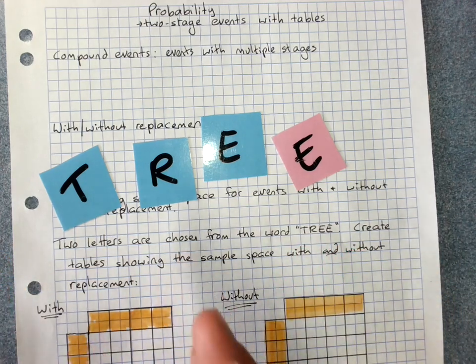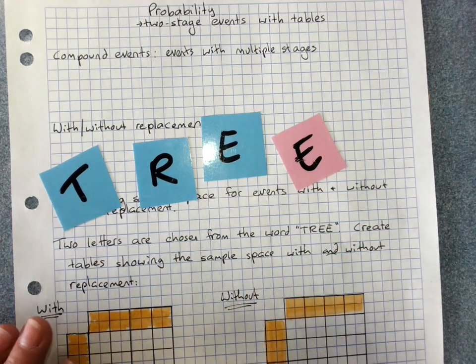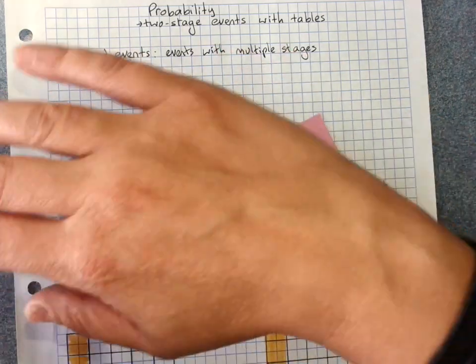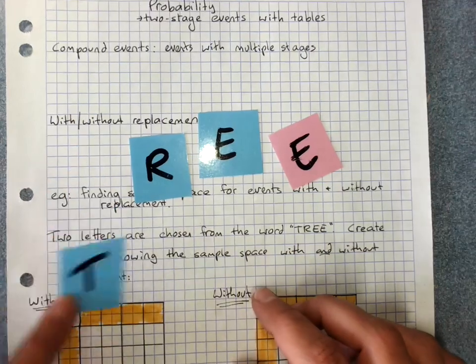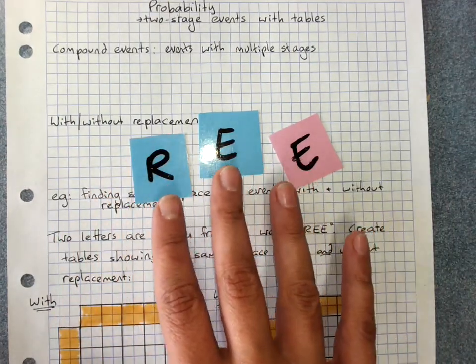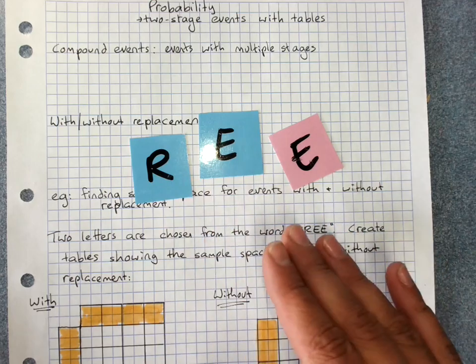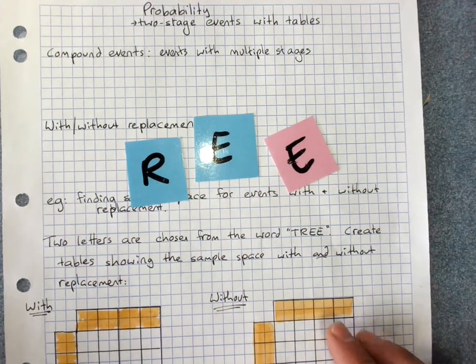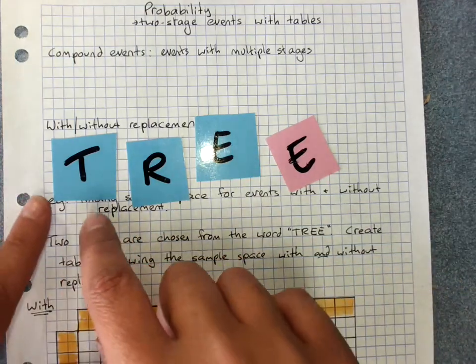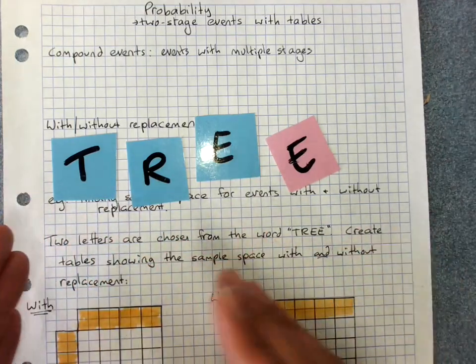And the question is, are you putting the first letter back before you choose the second one? If I choose a letter randomly and I don't put it back, then what's left has changed, my options have changed, and the possible probabilities have changed. But if I do put it back for the second one, then I can still choose it again for the second choice.